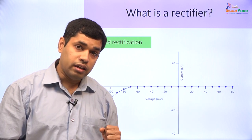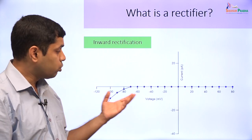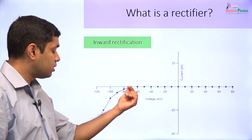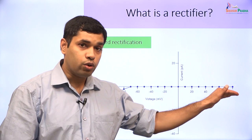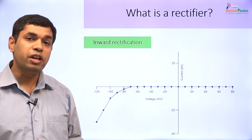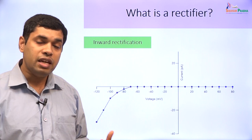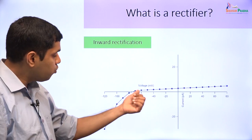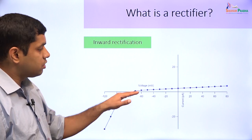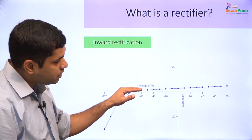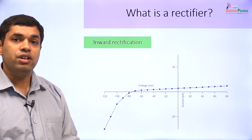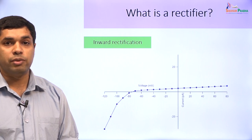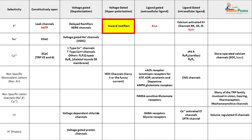It may not be that a current is a pure rectifier. In this example, the channel passes inward currents but does not pass any currents at all in the outward direction, but in the cell that may not be the case. The channel may pass inward currents at a much larger rate compared to the outward currents. Now let us discuss the different inward rectifier channels commonly seen in the body — we are talking about inward rectifier potassium channels.